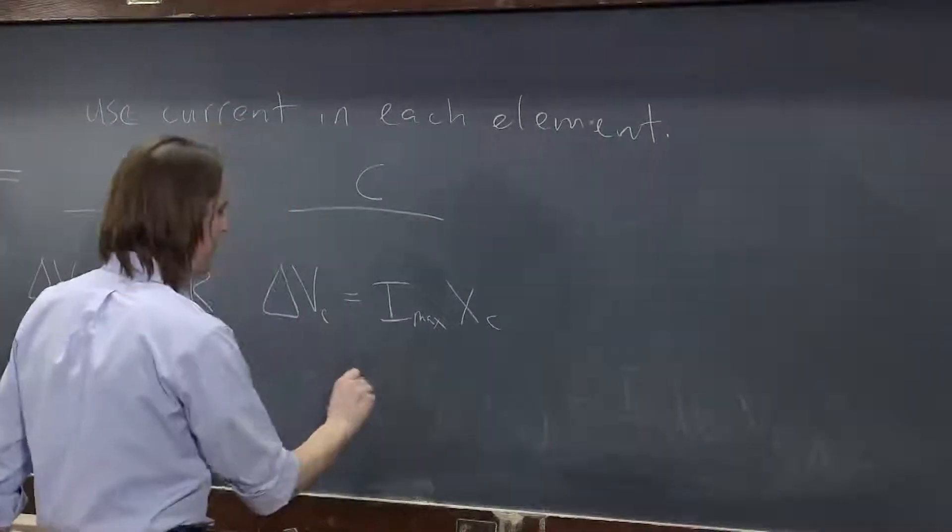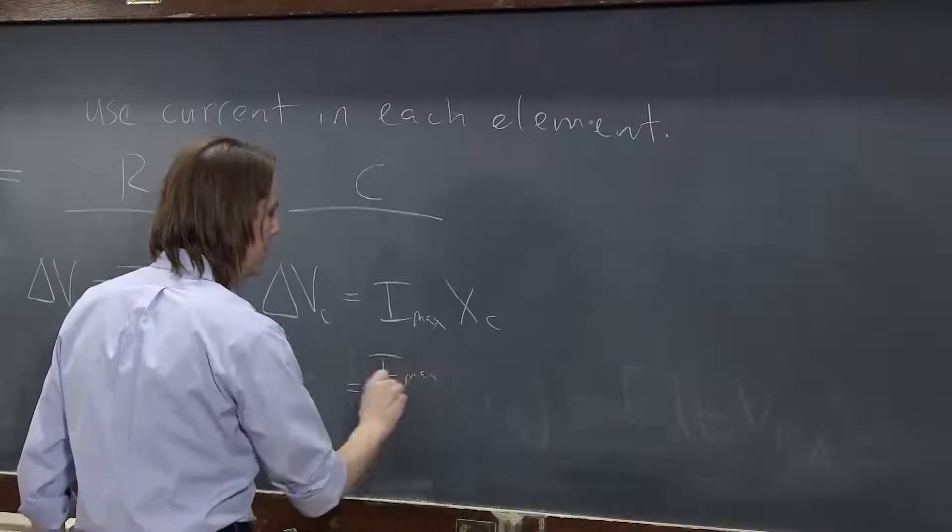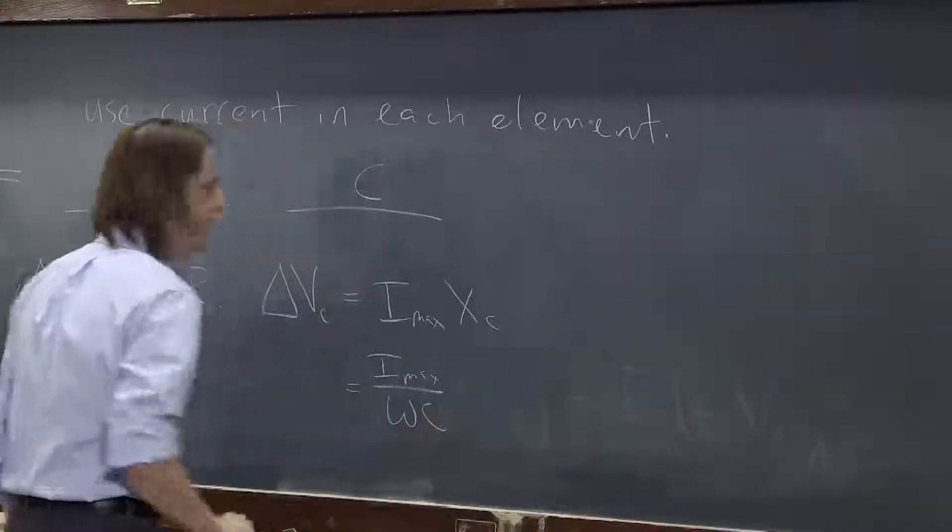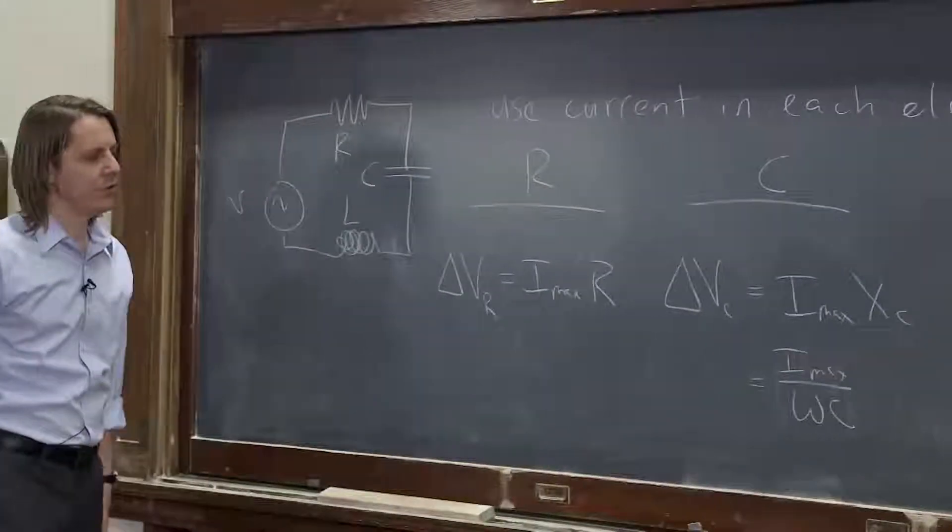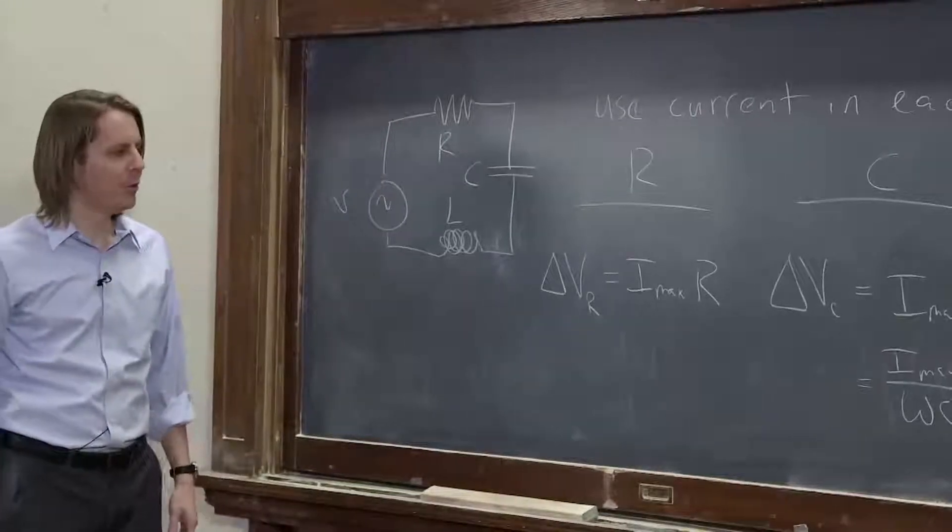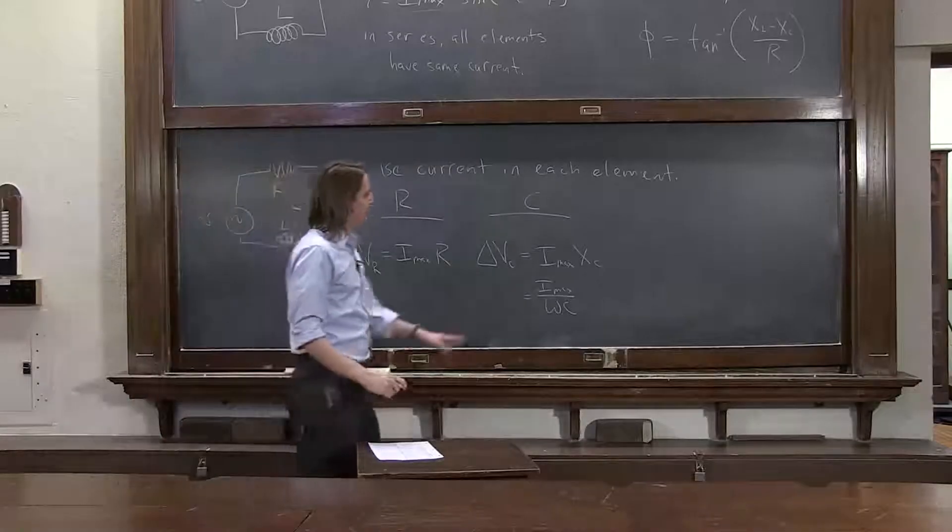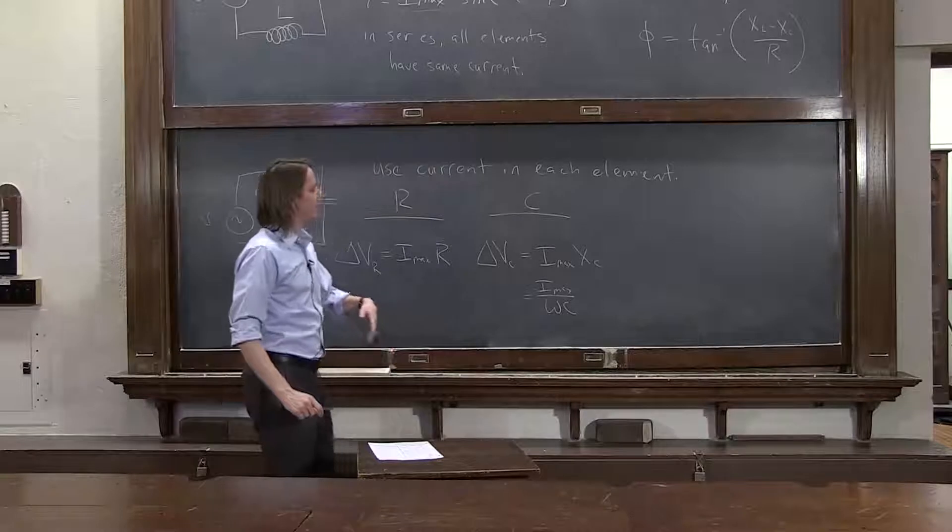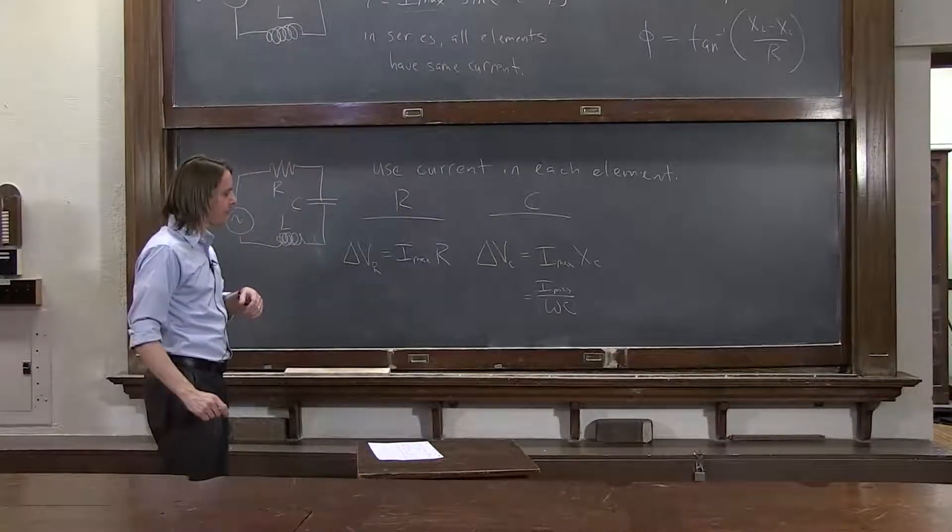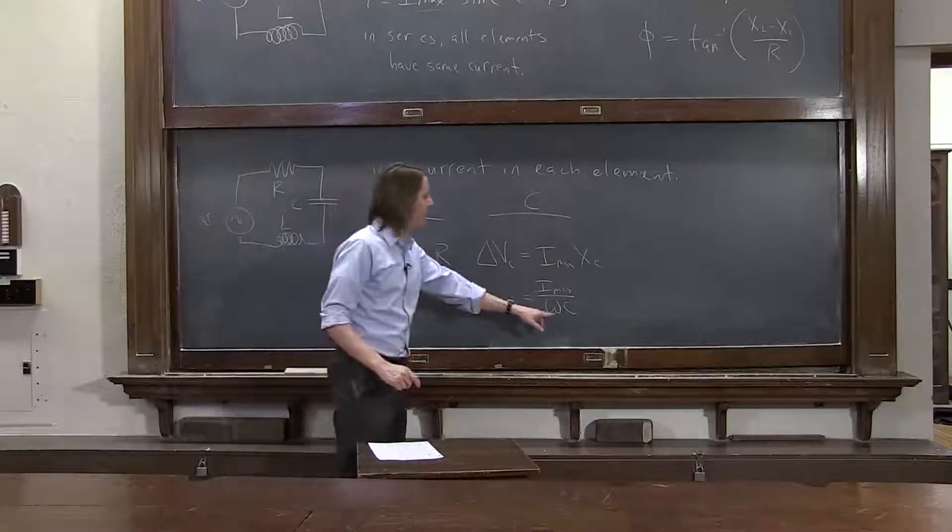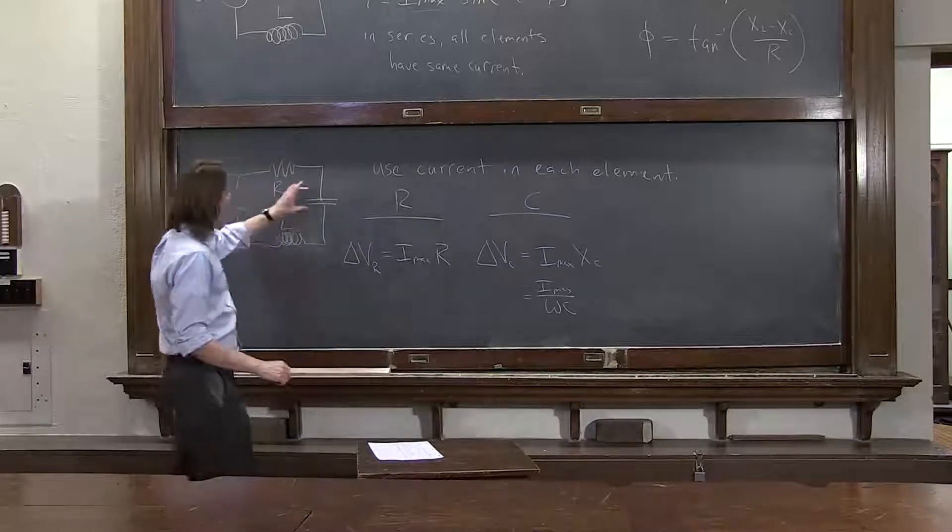But that's basically equal to Imax over Omega C, because the capacitive reactance was one over Omega times C. So you can see, as the frequency gets higher, the voltage drop across the capacitor will get smaller.